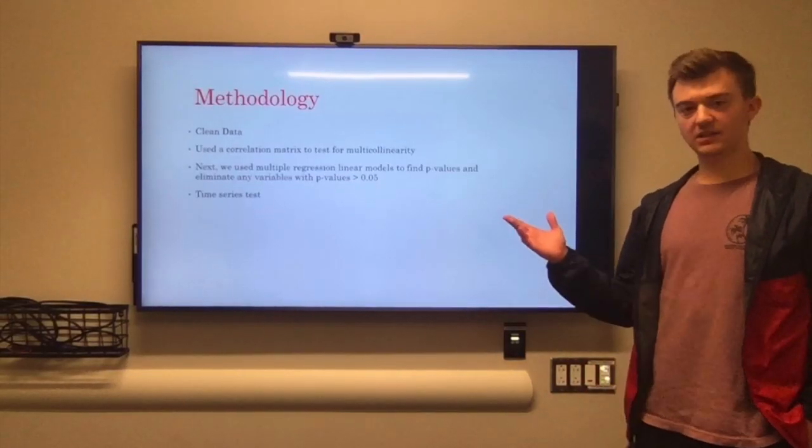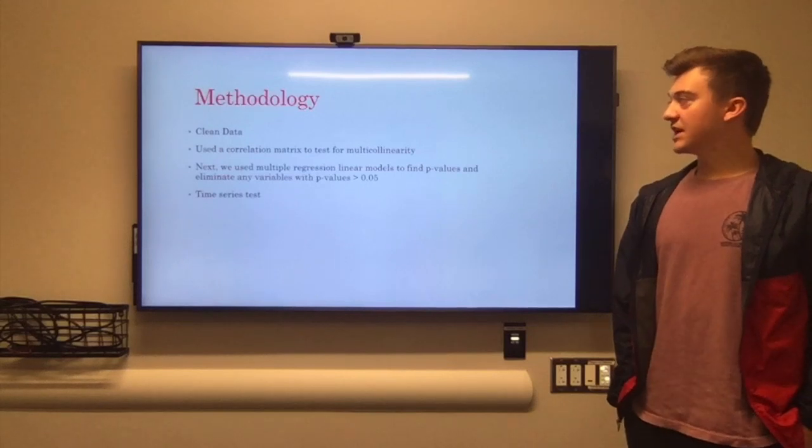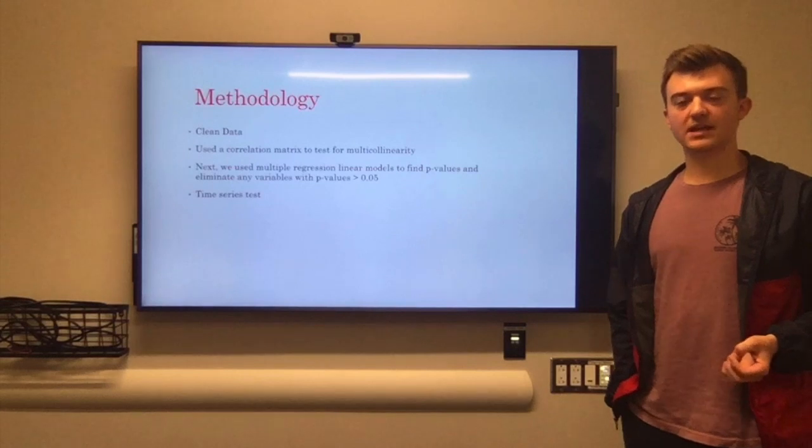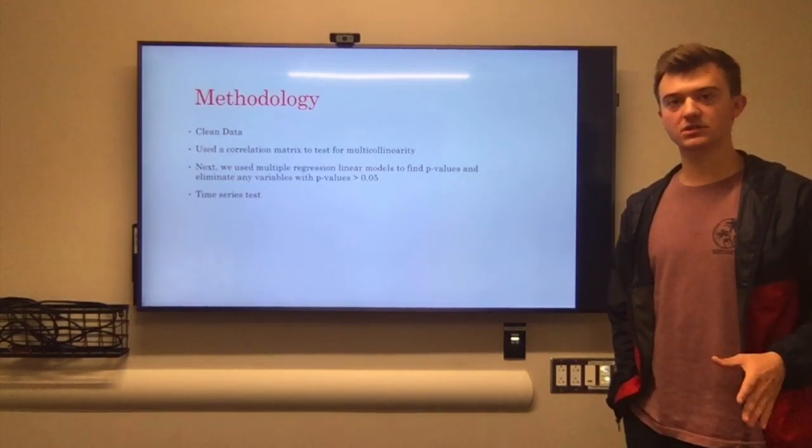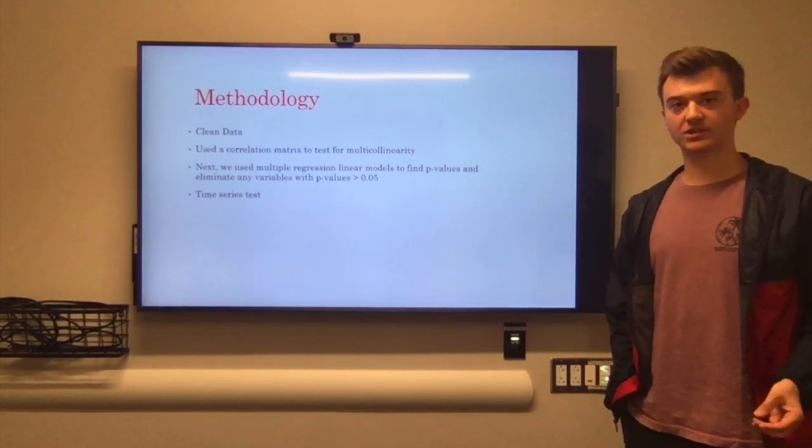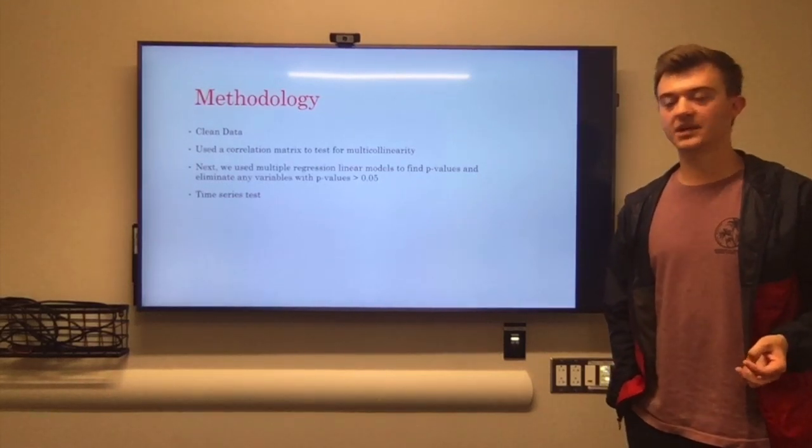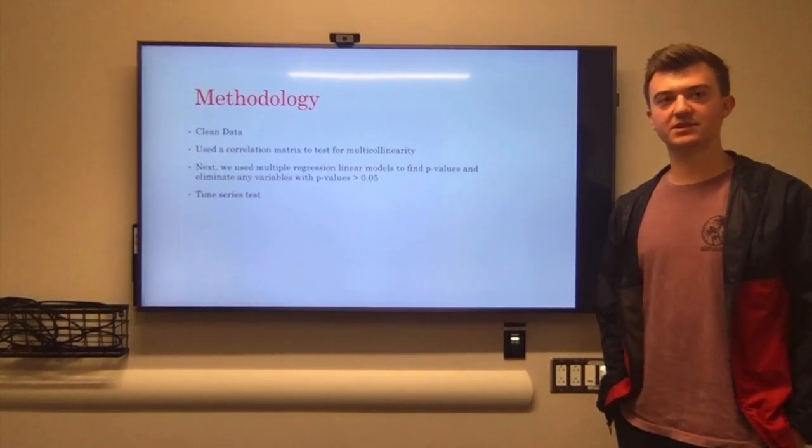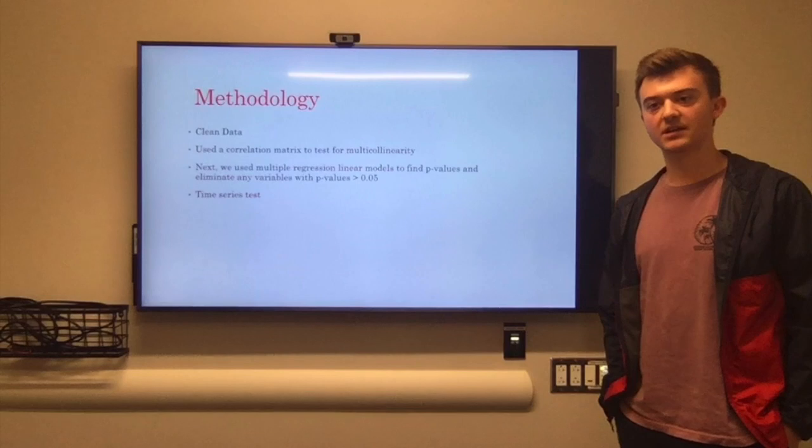Our first step was cleaning the data in order to be able to run tests. The first test we ran was a correlation matrix, which basically looks at the variables and allows us to find out which ones are too closely related so we can eliminate those. Next, we do a multiple regression, and it gives us the p-values so we can eliminate the p-values that are greater than 0.05. And finally, we ran a time series to predict what the winning percentage of a team will be in the next year.